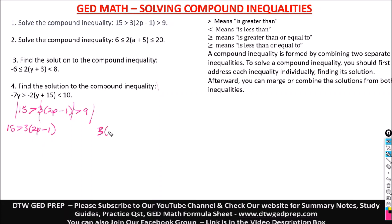Your middle goes to your left, and also your middle goes to your right. So we solve each separately, then combine them. For the left: we have 15 greater than, opening the parentheses, 6p minus 3. The trick with compound inequalities — leave the p here, take the minus 3 to the other side.